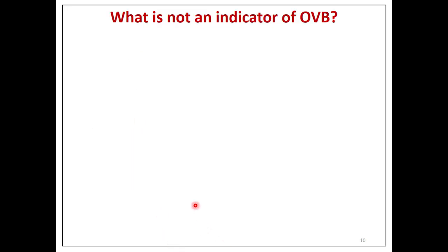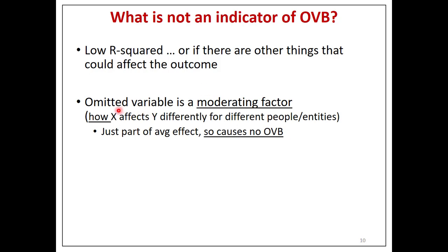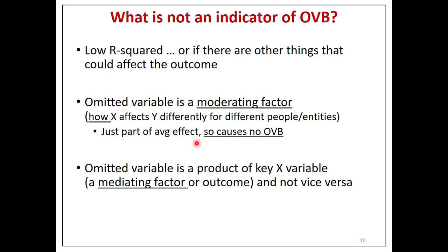What is NOT an indicator of omitted variables bias? A low R-squared, or the fact that there are other things that could affect the outcome — that is not an indicator. Those other things have to be correlated with the key X variable, and not because the key X variable affects them. If the omitted variable is just a moderating factor — giving information on how the key X variable affects outcomes differently for different people — that's okay. For example, the effect of college isn't the same for everyone; moderating factors are just part of the average effect, not OVB. Similarly, if the omitted variable is a product of the key X variable, that's a mediating factor — that's big questions five and six — and also not an indicator of OVB.